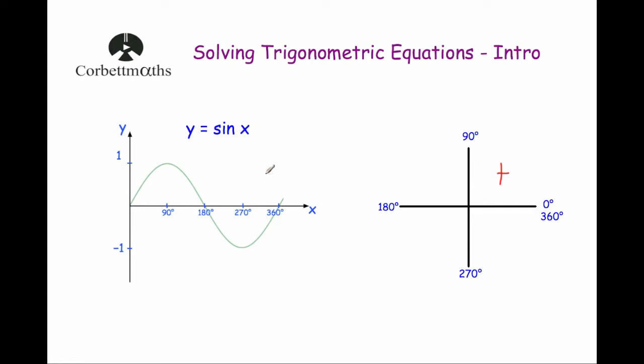For angles between 90 and 180 degrees, our obtuse angles, sine is going to be positive as well — for example, the sine of 150 is 0.5. So we write positive in this quadrant between 90 and 180 degrees. For reflex angles between 180 and 270 degrees, all sine values are going to be negative. And angles between 270 and 360 are negative as well. So for sine x: positive from 0 to 90, positive from 90 to 180, negative from 180 to 270, and negative from 270 to 360.